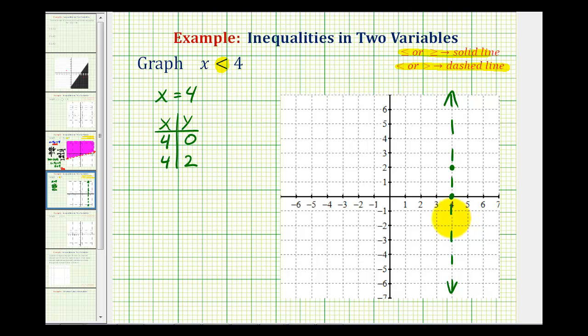Now if you knew it was going to be a vertical line, that's great. If you weren't sure if it was going to be vertical or horizontal, I would always recommend making a quick t-table just to make sure.